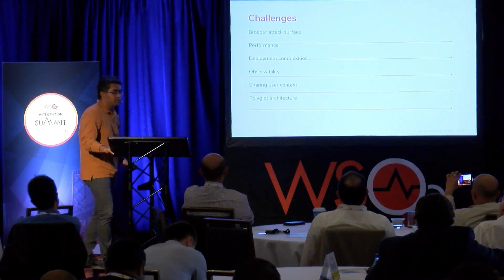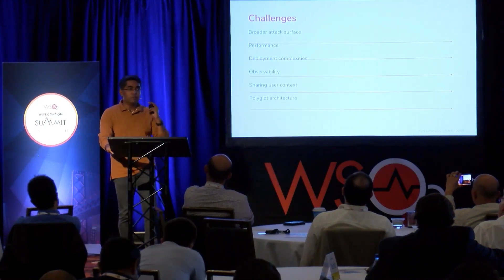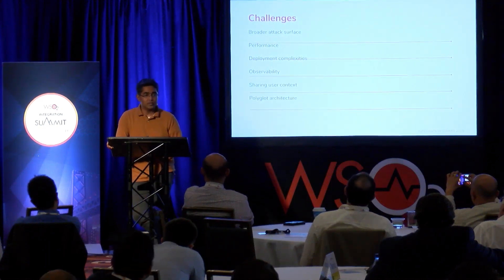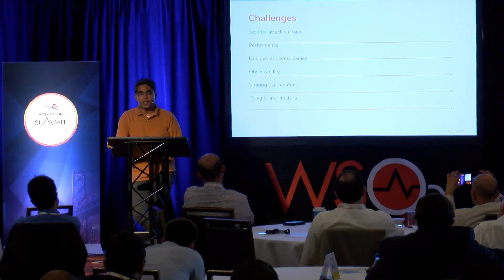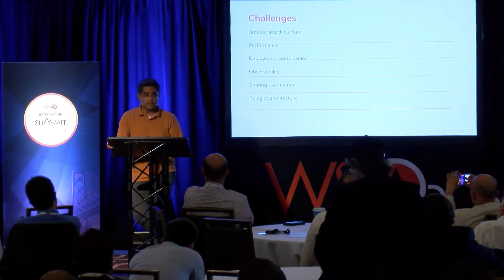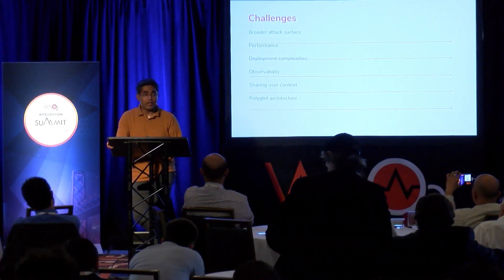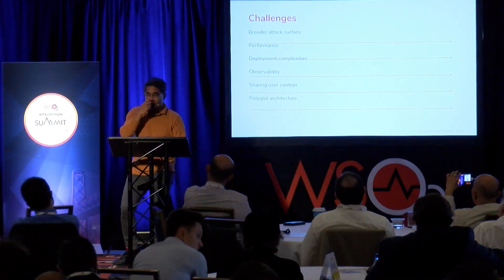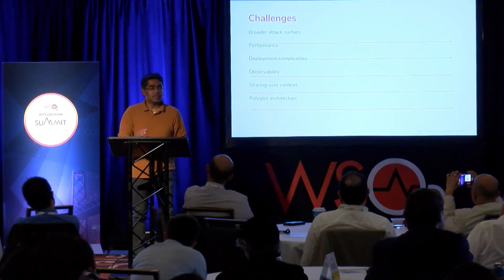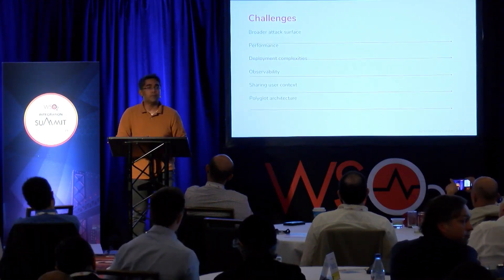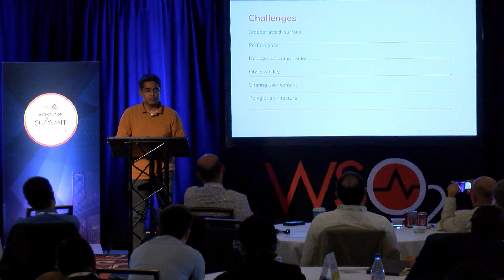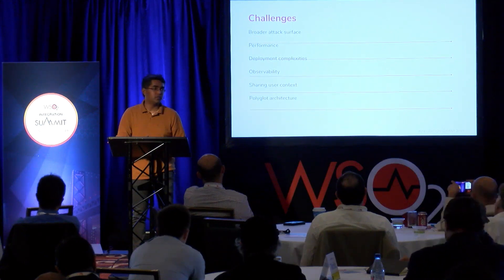Then there's observability. In terms of observability we worry about three things: logging, metrics, and tracing. In terms of security, we need to know who is doing what actions, where, when, why, and how. In a microservice deployment, a single request can span across multiple microservices, so we need proper distributed tracing and proper correlation.